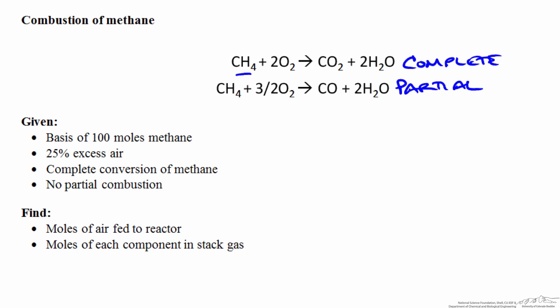In this example, we're given a couple pieces of information. We're going to assume a basis of 100 moles of methane that are fed to the reactor, and we know that air is fed at 25% excess. Inside the reactor, we have complete conversion of methane and no partial combustion. Based on this information, we want to find the moles of air fed to the reactor and the moles of each component in the stack gas.